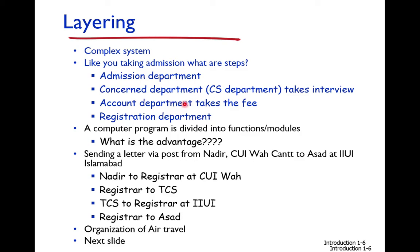The CS department only takes the interview — they are not concerned with admission criteria or requirements. The admission department sends a shortlist to the department. Similarly, the accounts department collects fee only after getting confirmation from the CS department. The registration department registers the student after fee payment. So the university admission system is divided into four parts, and each department does its own work.